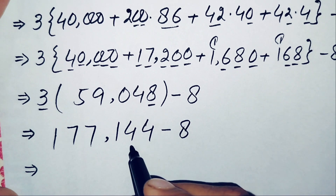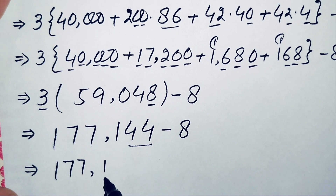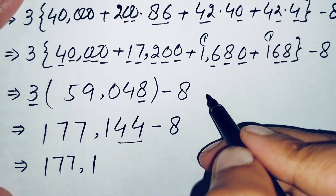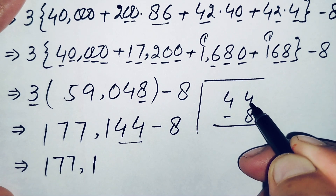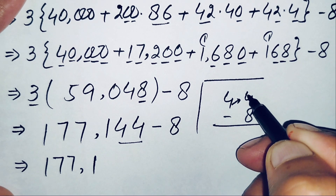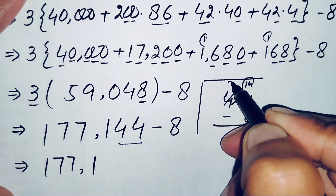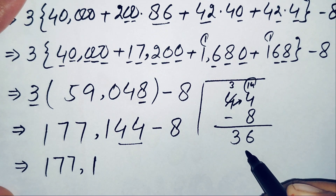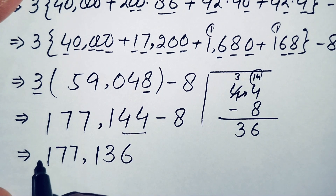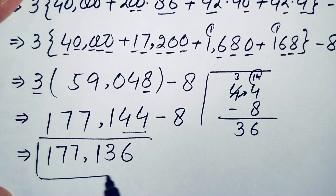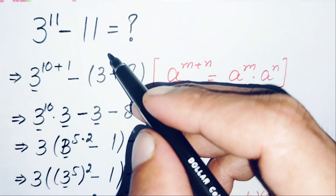Finally we subtract 8 from 177,144. The first four digits 1,7,7,1 remain the same. For 44 minus 8: we cannot subtract 8 from 4, so we borrow — 14 minus 8 is 6, and the tens digit becomes 3. So 44 minus 8 gives 36. Therefore 177,144 minus 8 equals 177,136, which is our final answer.